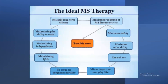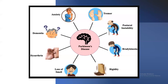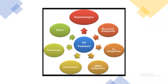Parkinson's disease shows tremors, postural instability, bradykinesia, rigidity, loss of smell, dysarthria, dementia, and anxiety. Treatment uses dopaminergics. Drug classifications used include muscarinic antagonists, A2 antagonists, NMDA antagonists, glutamatergics, serotonergics, and some other drugs. These are used for the treatment of Parkinson's disorder.